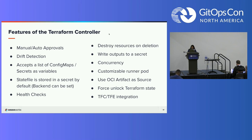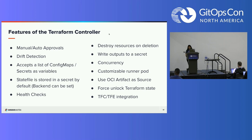With that, you can actually customize your runner pod — so if you have a custom image or something you need to set, you can do that. With Flux's new addition of OCI support, the Terraform controller was quick to follow — it can also use OCI artifacts as source and create OCI artifacts. There is the ability to force unlock Terraform state if for some reason you need it. And lastly, it does play nicely with Terraform Cloud and Terraform Enterprise as well — there's integration with that if you're using that for your backend.